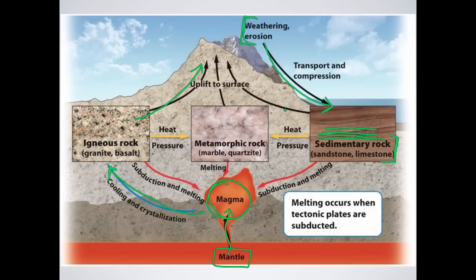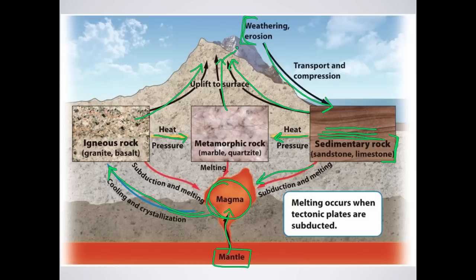From there, a couple things can happen. The sedimentary rock could get pushed back up to the surface and go through weathering and erosion all over again. It could get subducted down under the earth and melted back into magma. Or if it is subjected to intense heat and pressure, it will change into metamorphic rock. Igneous rocks can also be heated and pressed into metamorphic rock, and metamorphic rocks can be heated and pressed into other metamorphic rocks. Those metamorphic rocks could get pushed up to the surface or melted back into magma. Know the basics of this diagram and how it describes the cycling of minerals through our earth.